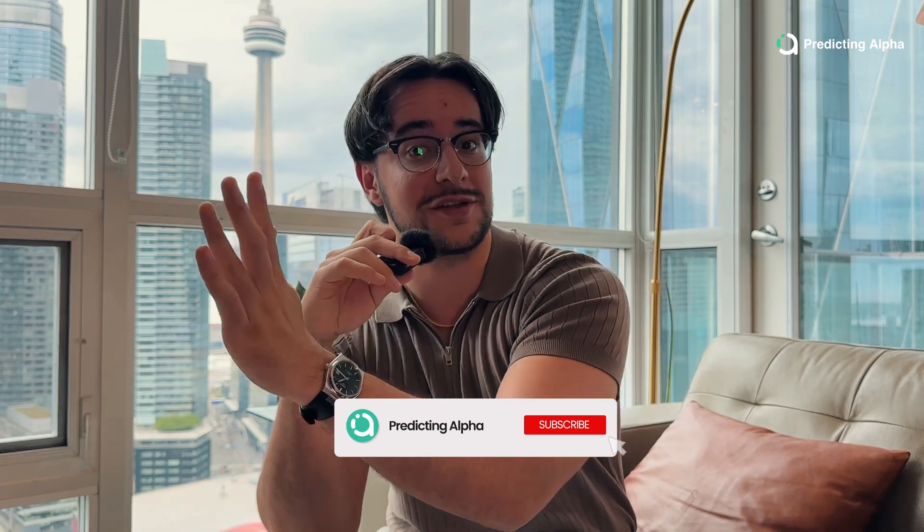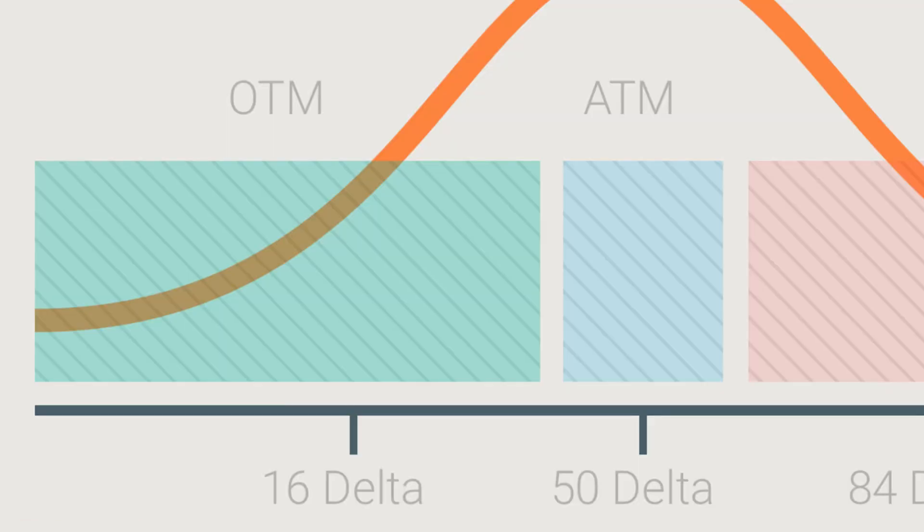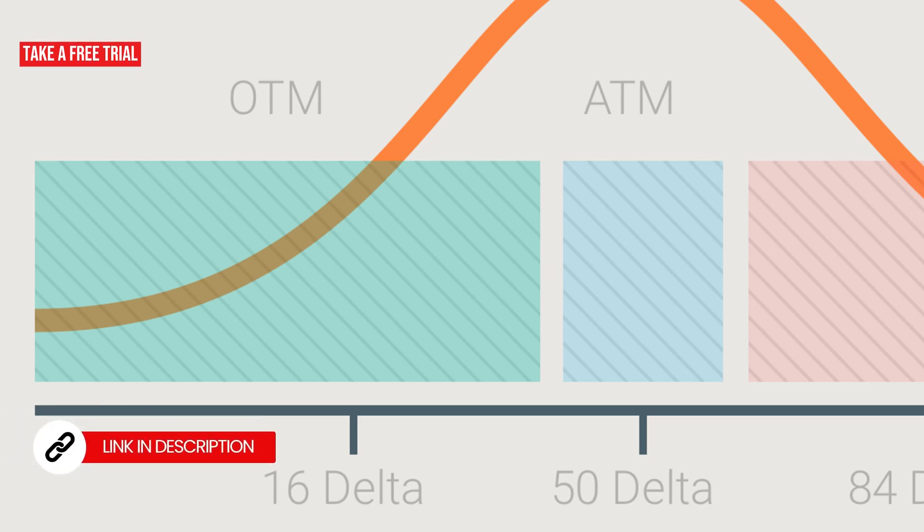That's why in that call example, the 90 strike call — while the stock is trading at 100, so it's in the money — had a higher delta than the at-the-money 100 strike call or the 110 strike. And then the further out of the money you go, the lower your delta, because there's a lot less potential for intrinsic value. It's far out of the money, so a $1 up move doesn't really impact the value of the option as much as it would if it were in the money or at the money.